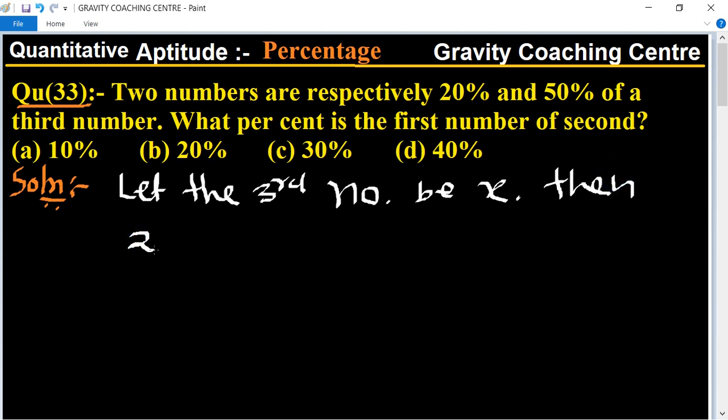The first number equal to 20% of the third, which means 20 upon 100 into x. Zero zero cancel...